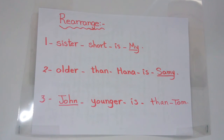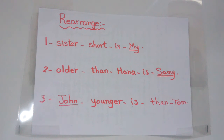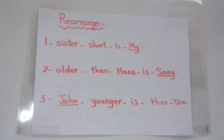Let's do this exercise together — Rearrange, يعني رتب. Take care that you will start with the underlined word. Number one: Sister short is my. Number two: Older than Hana is Sammy. Number three: John younger is than Tom. I'll give you time to think of the answer.